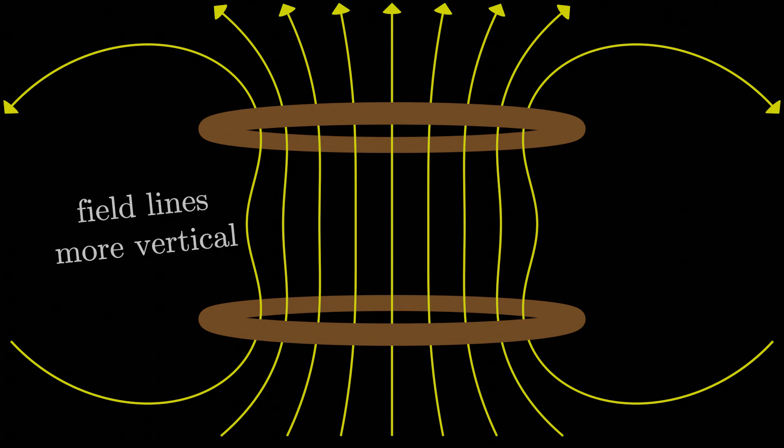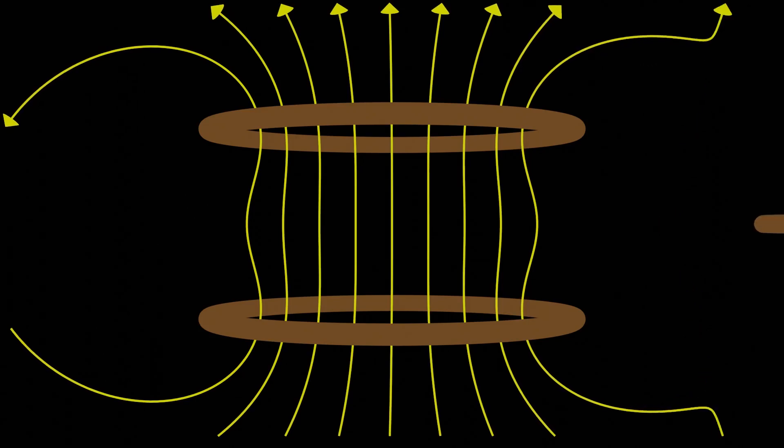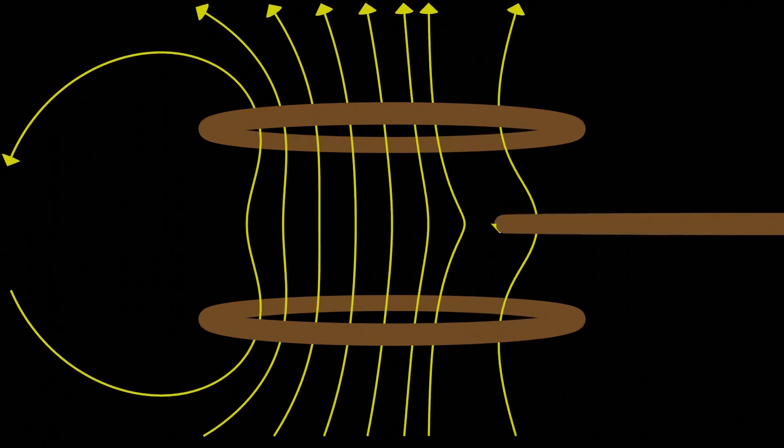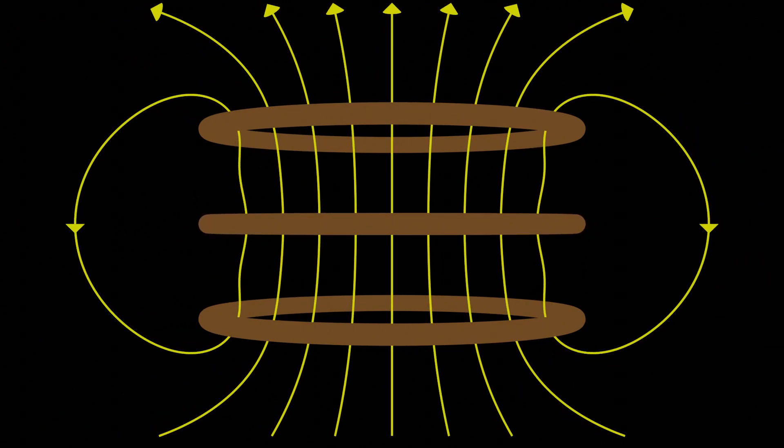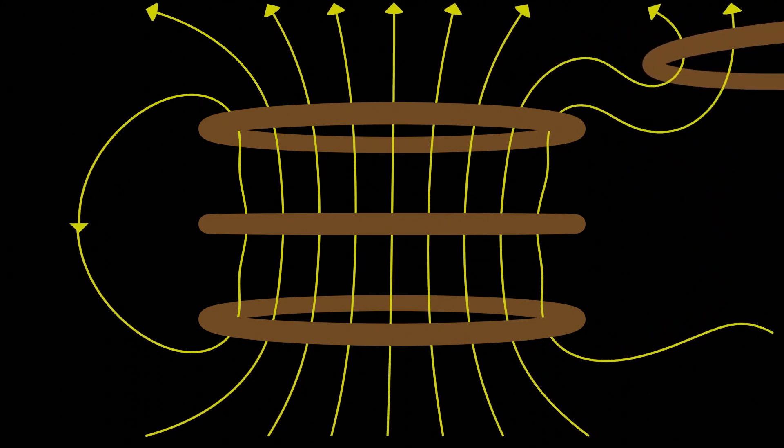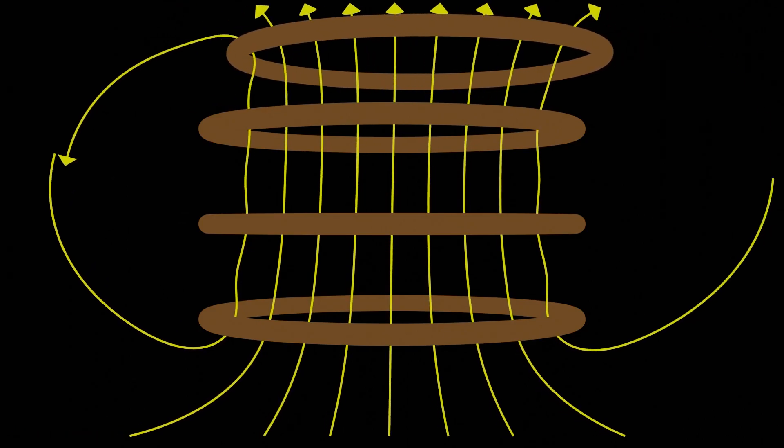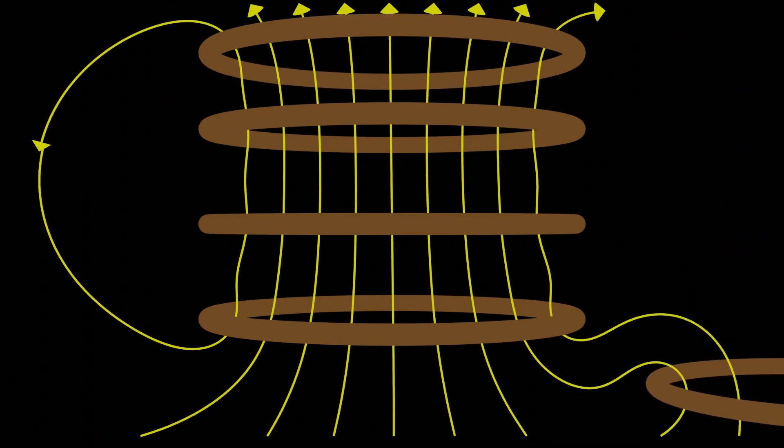And what if we add a third loop into the mix? Not too much more to say, things are a little complicated looking, but when the dust settles, we definitely have a more vertical magnetic field in the middle region here. And that's something I kind of want to point your attention to, is the more loops we decide to add, the more and more the magnetic field becomes vertical within this region in the middle.